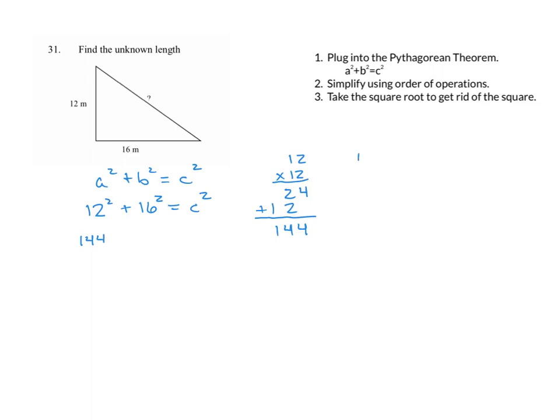Similarly for 16 squared, 6 times 6 is 36. 6 times 1 is 6, plus 3 is 9. 1 times 6 is 6, and 1 times 1 is 1. If we add this, we get 256.